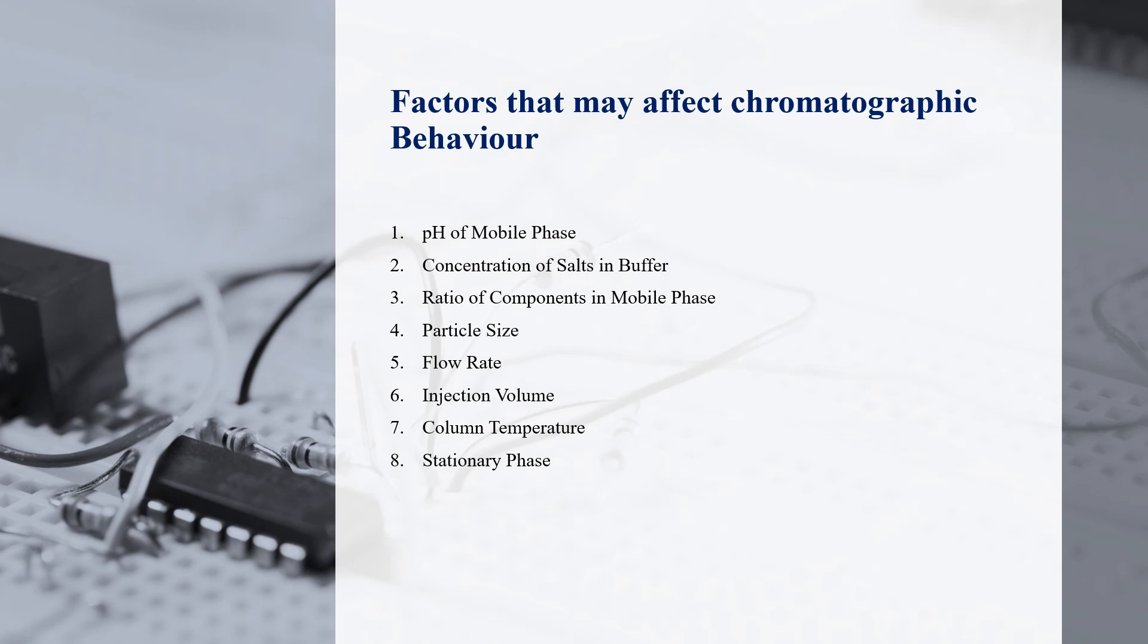pH of the mobile phase, concentration of salts in buffer, ratio of components in mobile phase, particle size, flow rate, injection volume, column temperature, and the stationary phase. We are going to discuss each of these factors separately to establish how it affects the chromatographic behavior of the HPLC.